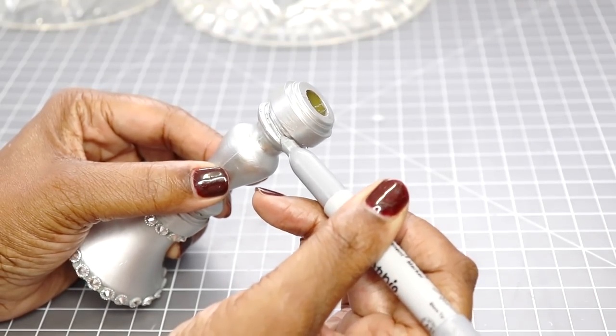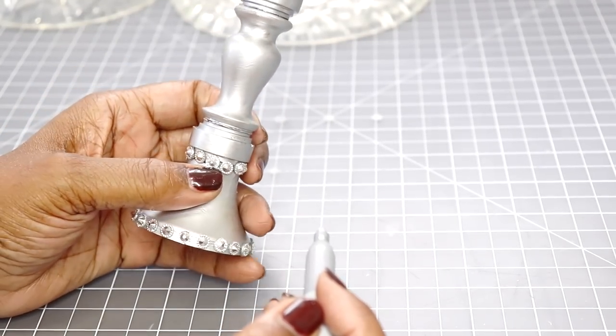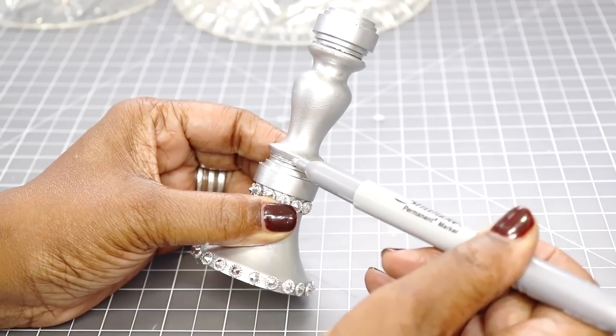So right here I'm just using my silver marker just to cover up any areas where there may be some glue exposed.